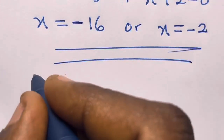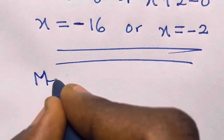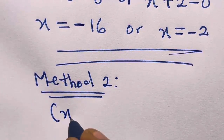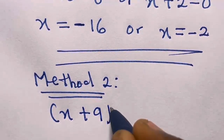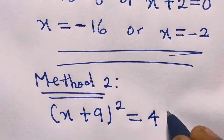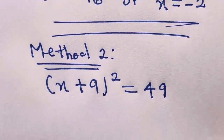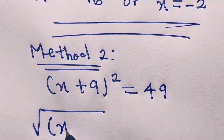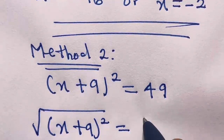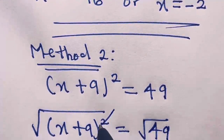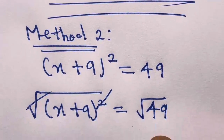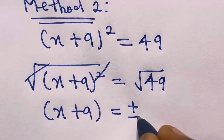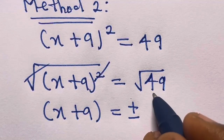Now for the alternative method — let's call it Method 2. We have x plus 9 raised to the power 2 equals 49. Here we can square root both sides. If we square root both sides, we have the square root of x plus 9 squared, which cancels the square, giving us x plus 9.